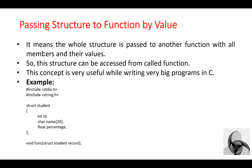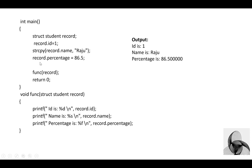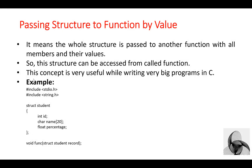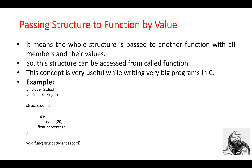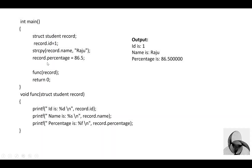Then assign a value to the second data member. The second data member is of string type, so we use the strcpy function. strcpy is a string library function which is built into the string.h header file. strcpy assigns the value 'Raju' to the member name. Then assign the value to the third data member, 'percentage' — record.percentage = 86.5.